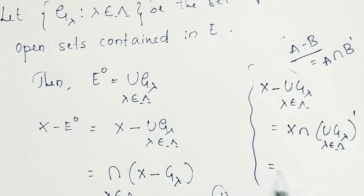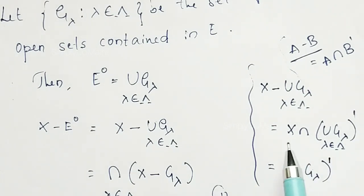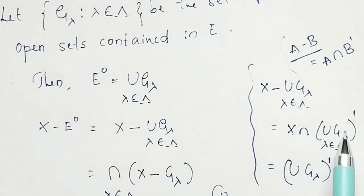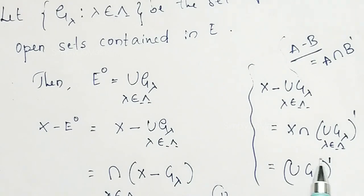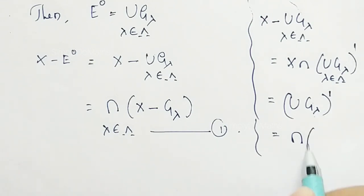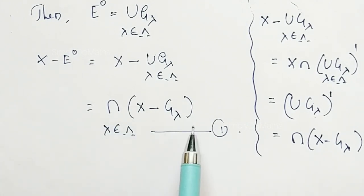Now, X intersection (union of G_lambda) complement can be simplified. Since X is the greatest space and G_lambda belongs to X itself, the intersection with X reduces to just (union of G_lambda) complement. Applying De Morgan's theorem, (union of G_lambda) complement is the intersection of G_lambda complements, which equals intersection of X minus G_lambda.